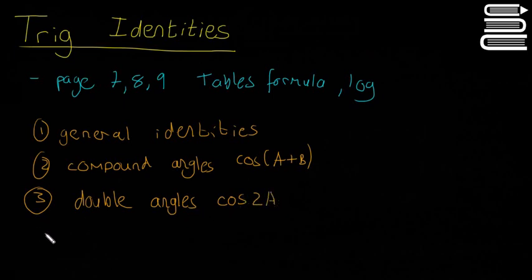Then the last one is called difference and product of angles. Product is sin A sin B, and then a difference would be sin A minus sin B.